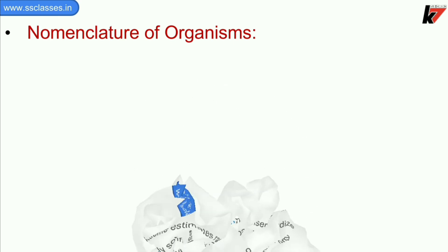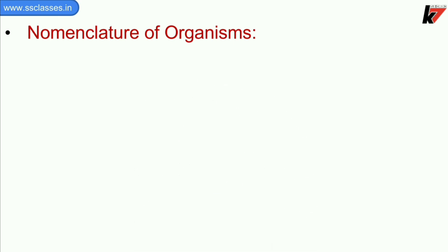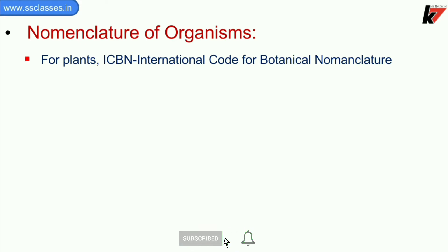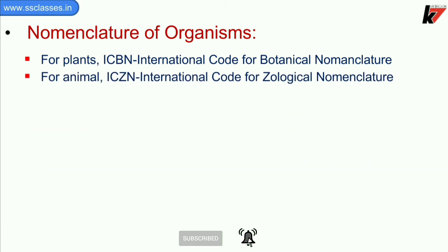Now we will see nomenclature of organisms — how do we name a particular species. For plants, ICBN, that is International Code for Botanical Nomenclature, governs the naming system. And for animals, ICZN, that is International Code for Zoological Nomenclature, governs the naming system.